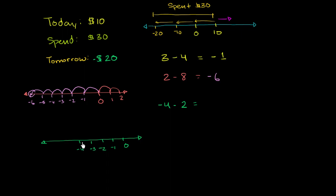Now we're going to subtract 2 from negative 4. So we're going to move 2 to the left. So if we subtract 1, we will be at negative 5. If we subtract another one, we are going to be at negative 6. So this is negative 6.